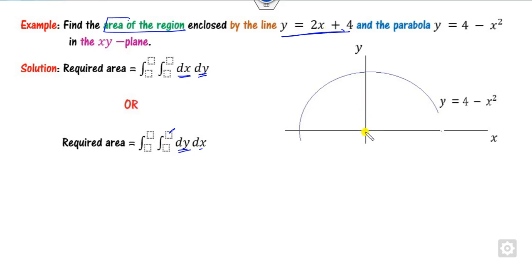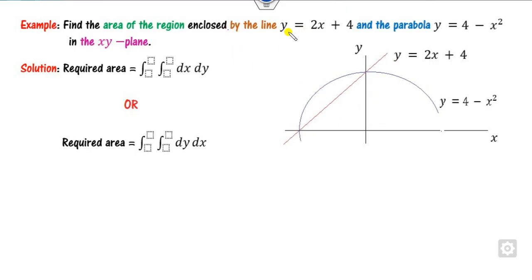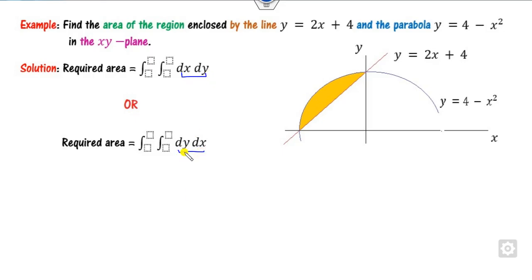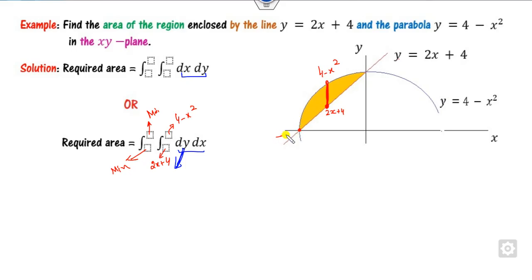Draw the line 2x + 4. At x = 0, y = 4; at y = 0, x = -2. Shade the area enclosed by the line and the parabola. If you take the vertical strip (integrate dy first), the lower limit of y is 2x + 4 and the upper limit is 4 - x². The minimum value of x is -2 and the maximum is 0, so the outer limits are from -2 to 0.